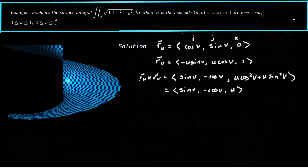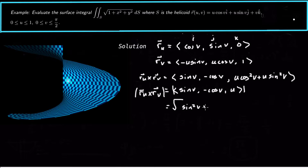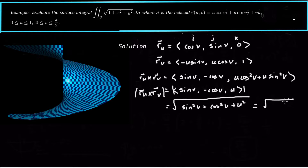Now we need the magnitude of this vector |r_u × r_v|, since we're doing a scalar surface integral. The magnitude is √(sin²v + cos²v + u²). Using the trig identity sin²v + cos²v = 1, this simplifies to √(1 + u²).